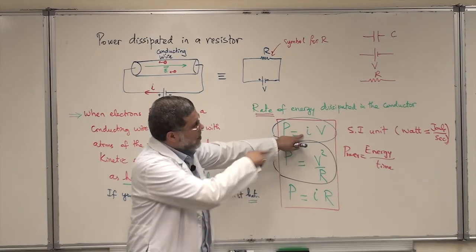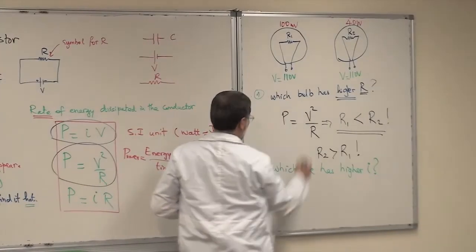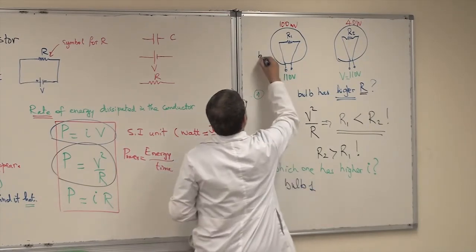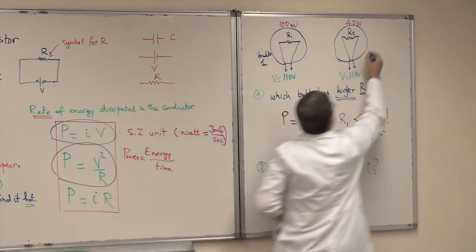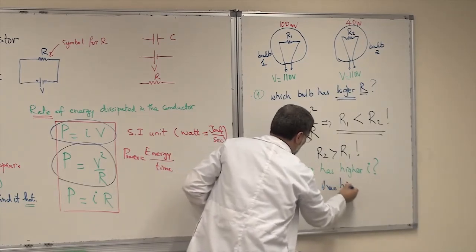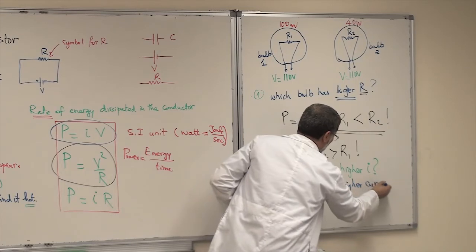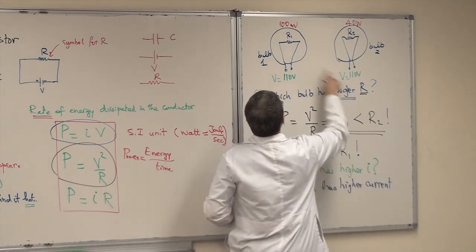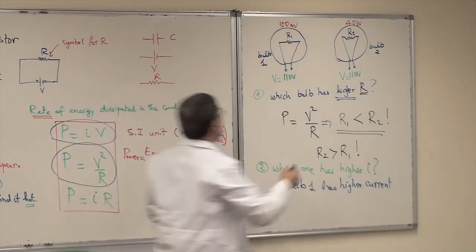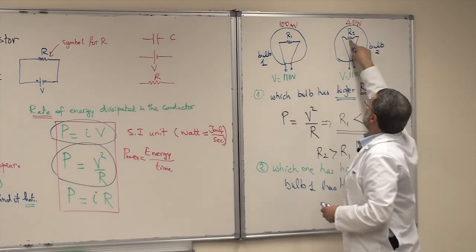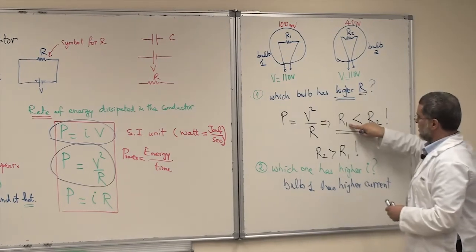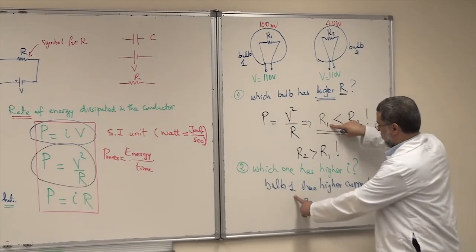So bulb one has the higher current. Why? Because it has higher power for the same voltage, and also because it has lower resistance — R1 is lower, so it allows higher current. Bulb number one therefore has the higher current.